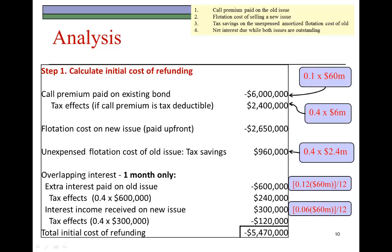The fourth item — the wrinkle — is the overlapping interest issue. Because the old issue is kept one month longer, the company pays an extra $600,000 in interest. The coupon rate on the old issue is 12% of $60 million, which is $7.2 million annually, divided by 12 gives $600,000 for the additional month. This is a financing cost, so there is a tax savings of $240,000, which is 40% of that $600,000 interest charge.